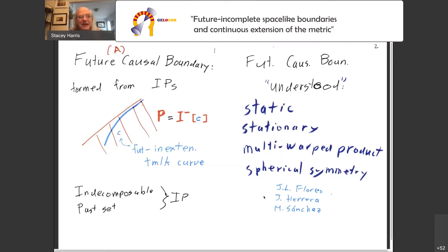The boundary I'm speaking of is the future causal boundary. As a few other speakers have mentioned, this is formed from IPs, that is to say, Indecomposable Past Sets. And specifically, a boundary IP, also known as a TIP, is the past of a future inextendable timelike curve.